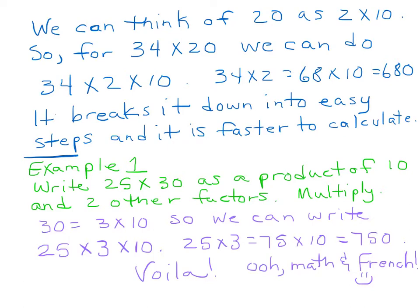In example 1, let's see. Let me go ahead and get there. It shows me, write 25 times 30 as a product of 10 and then two other factors. So we know that 30 equals 3 times 10. So we can write 25 times 3 times 10. So 25 times 3 is 75 times 10 is 750. Voila! See? Math and French, you're learning something. Voila! Here we go.